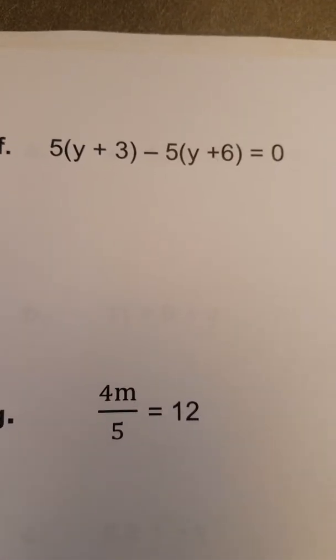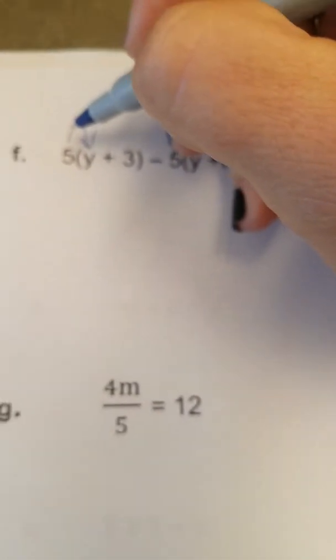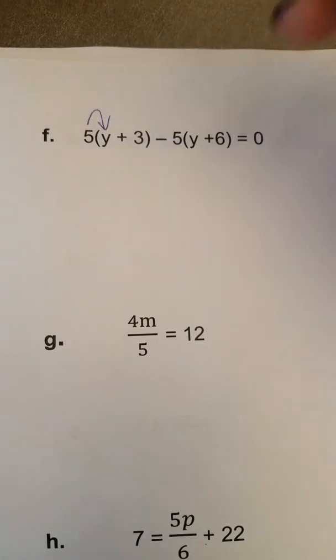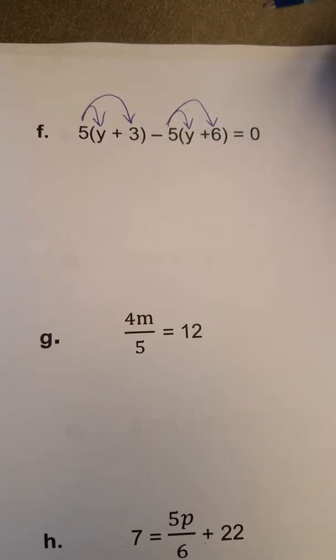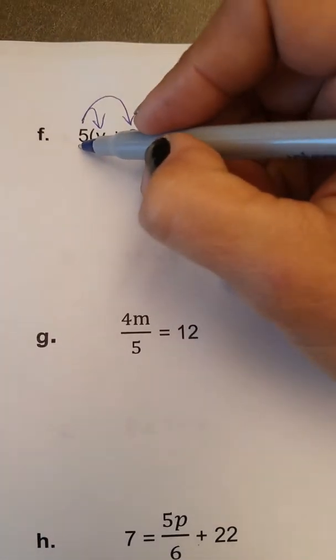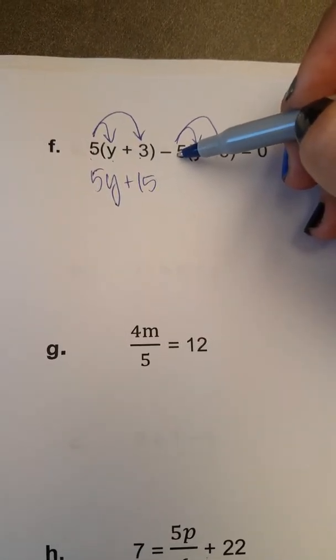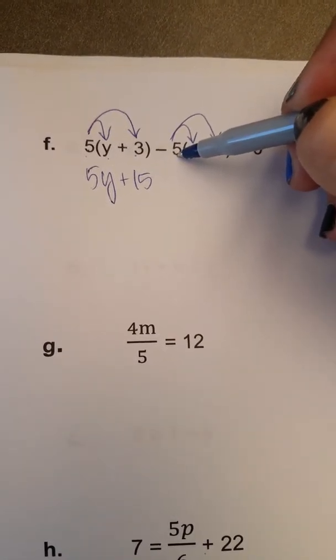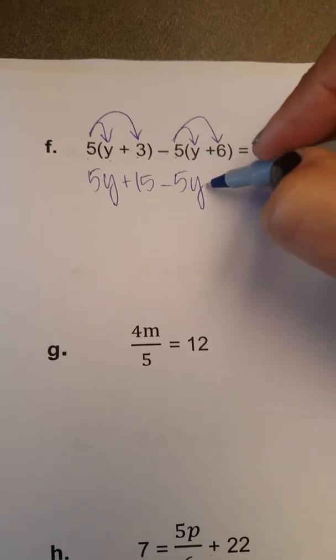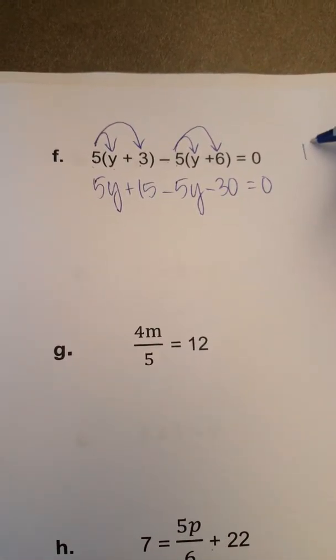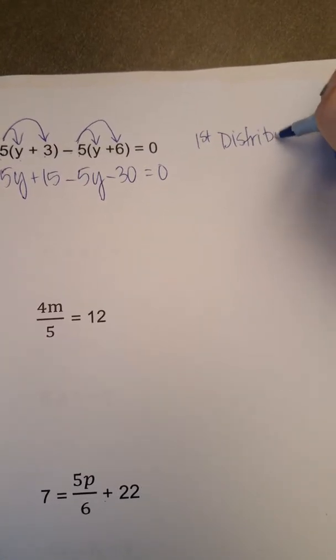In our next example, this is going to involve some distribution first. When you have a number out in front of the parentheses, we need to distribute the number in front of the parentheses into all of the terms in the parentheses, which means we have to multiply. So 5 times y is 5y, 5 times 3 is 15. For this next distribution, I need to keep the negative sign attached to the 5. So negative 5 times y is negative 5y, negative 5 times 6 is negative 30, and I bring down my equal 0. So the first thing I did to simplify was to distribute.